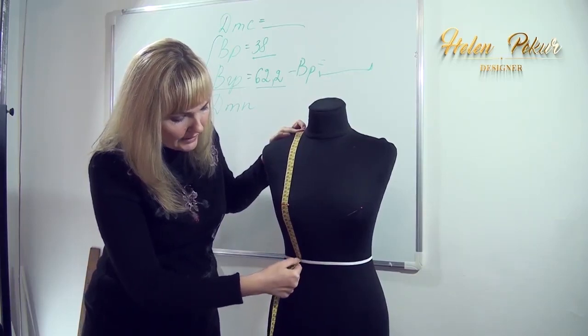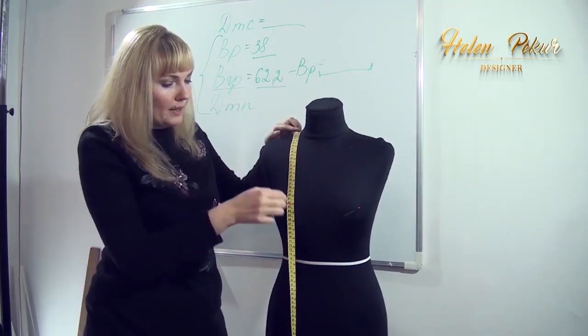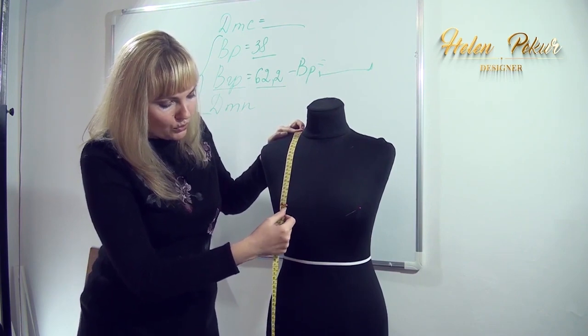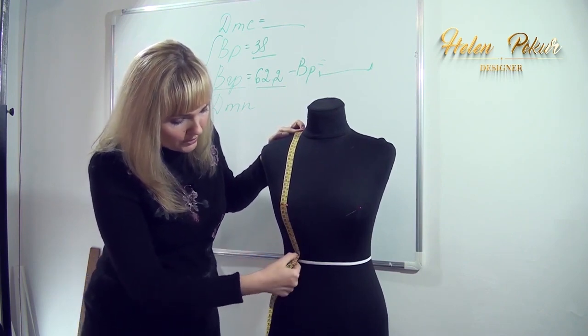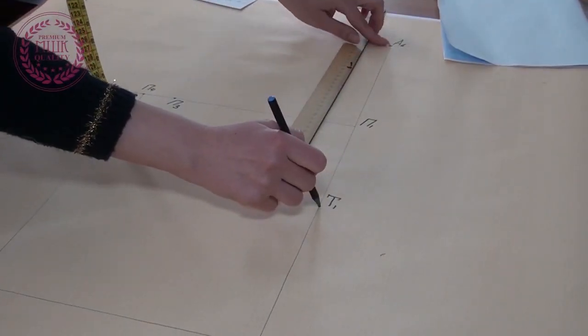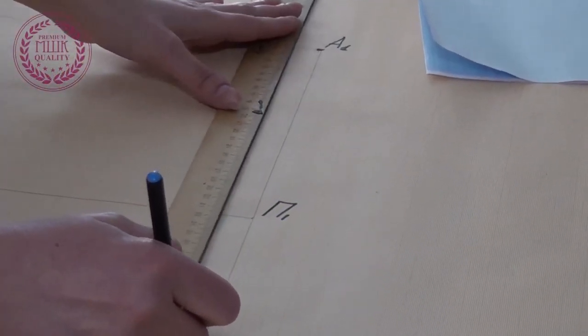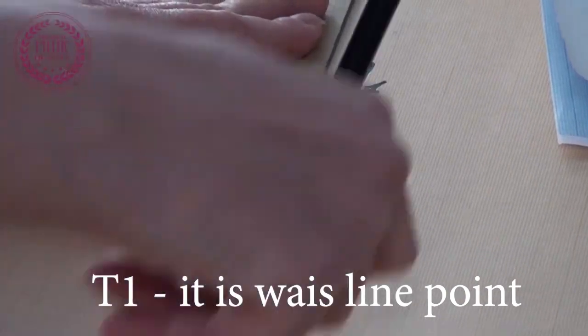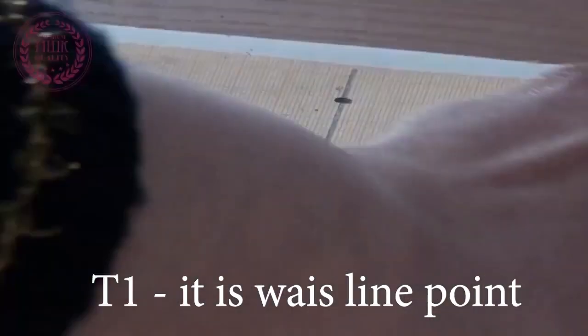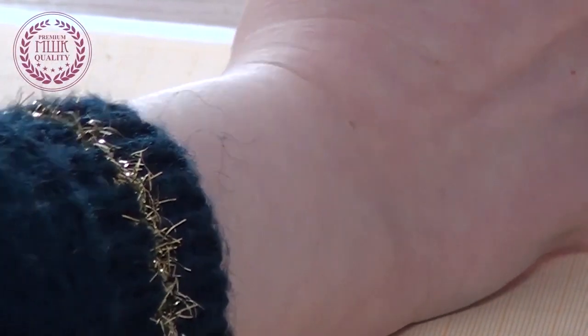Now I need the measurement front waist length. From the neck point through the bust point to the waistline. From the point T1 upwards I postpone the length of the front waist. And I mark point A2.